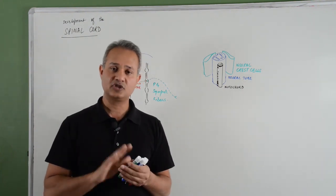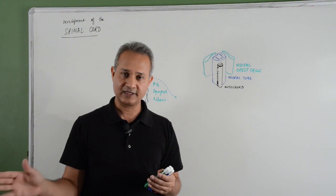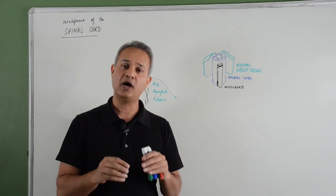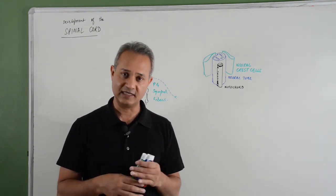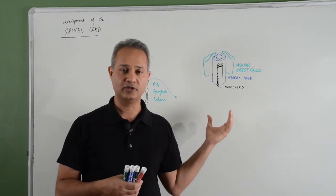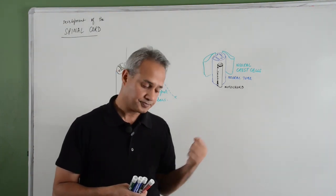This lecture assumes that you have already studied the previous one, or that you know how the neural tube is formed and neural crest cells are formed. We will now see how they become the spinal cord.